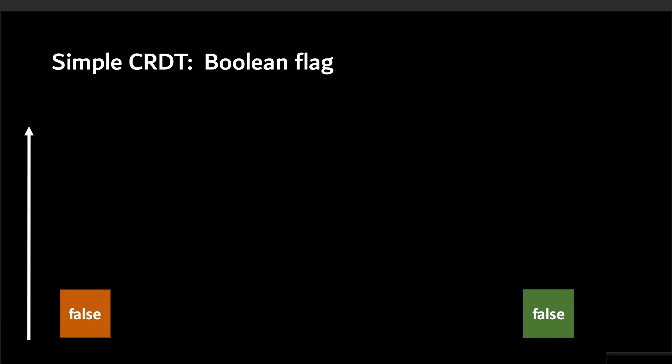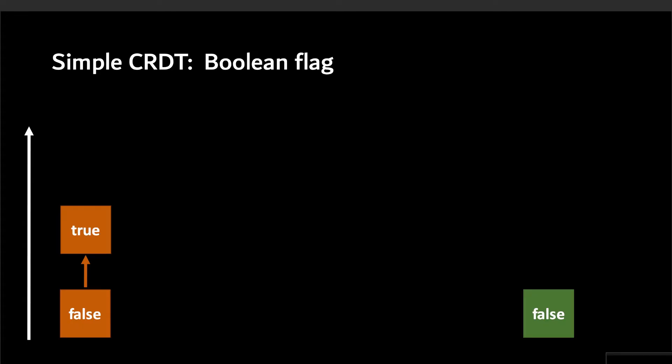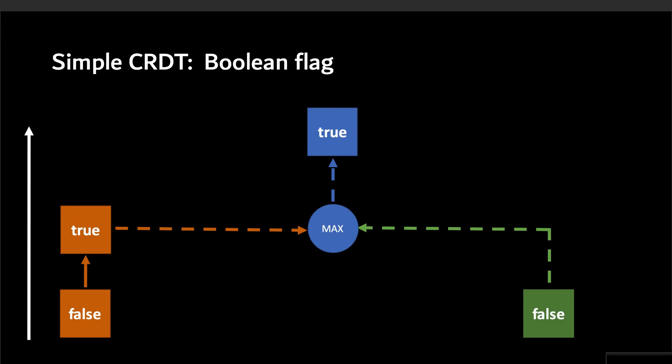Here we have the simplest CRDT possible: a shared boolean flag, which is initially set to false for all users. The only operation available is for each user to set their flag to true. But once that happens, we have a problem — is the shared state now true or false? So we have to define some kind of merging function that puts those two states together, and here we use the maximum and say that true is larger than false.